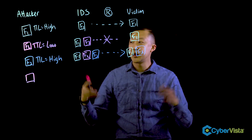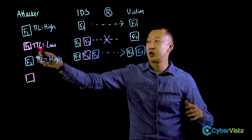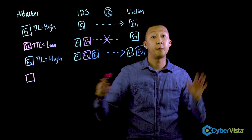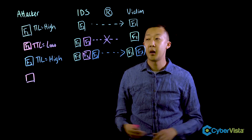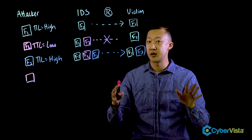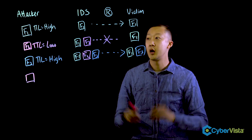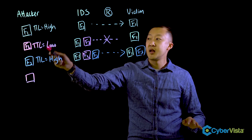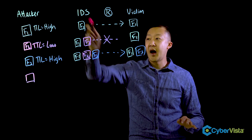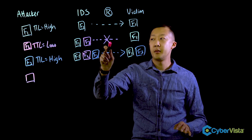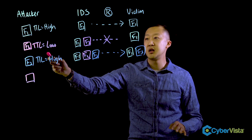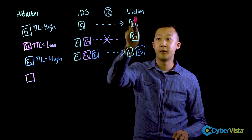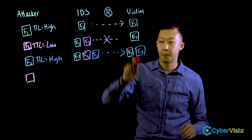The attacker will send the second fragment with a low TTL value and fake data. When they send it out, the IDS will hold on to it, but because it's a low TTL value, it won't make it past the router. So the victim never gets it.